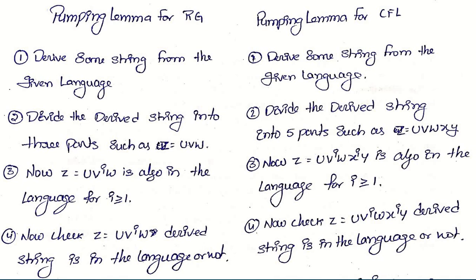To check whether a given language is regular using pumping lemma, we first derive some string from the given language. That derived string z is divided into three parts: z = uvw. As per pumping lemma, if z = uvw is in the language, then we can pump any number of times — that is, u v^i w is also in the language. Only then can we say that language is regular, otherwise it is not regular.